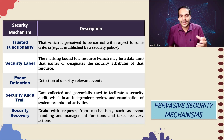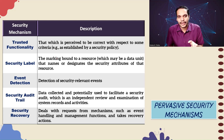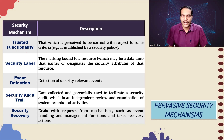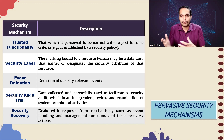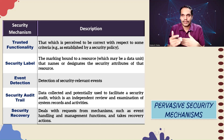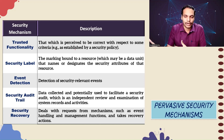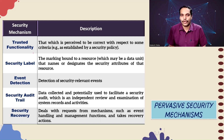Now let's look at pervasive mechanisms. As the name suggests, they are not specific to one particular protocol or constrained to one particular layer. The first is trusted functionality — that which is perceived to be correct with respect to some criteria. For example, a policy stating that a particular person, role, or action by a particular entity is trusted. Those kinds of criteria fall under this security mechanism.